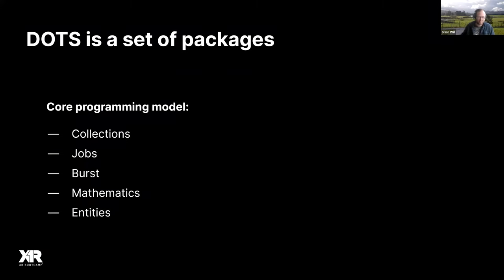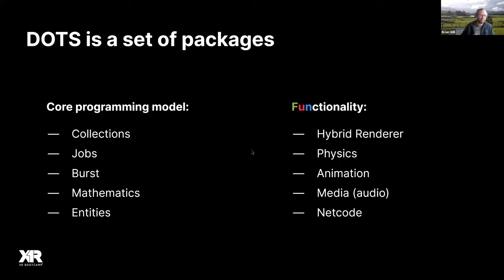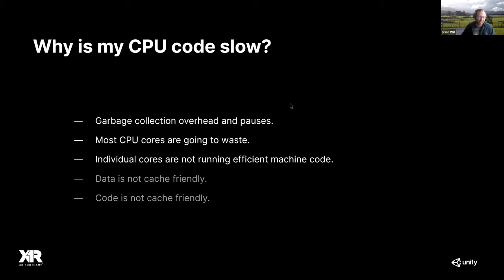You can use the first four packages — Collections, Jobs, Burst, and Mathematics — effectively in a conventional Unity game using GameObjects and MonoBehaviours, finding opportunities to solve performance problems. These five DOTS packages define what I'd call the core programming model: a way of writing code that leads to much more efficient CPU code. The other packages — Rendering, Physics, Animation, Audio, and Netcode — are implemented in terms of Entities and are not yet out of preview.